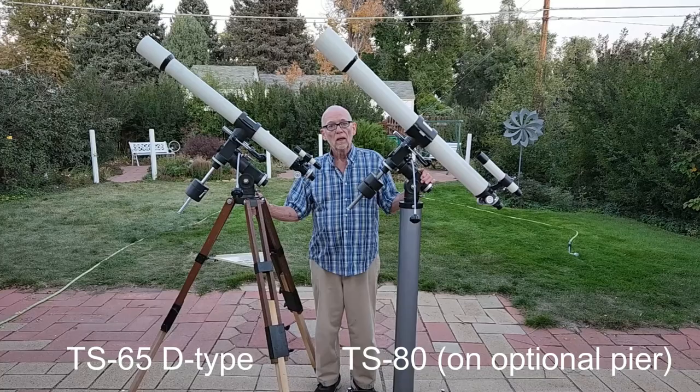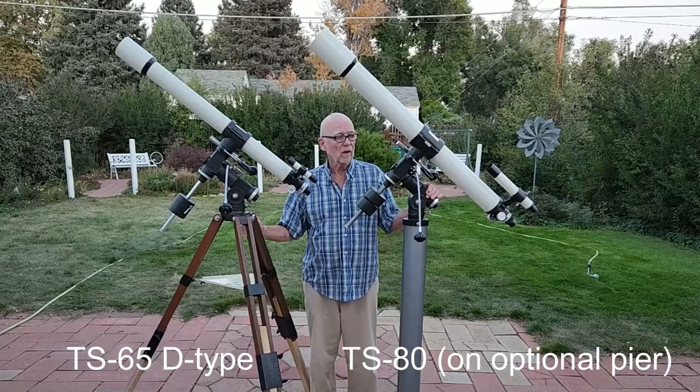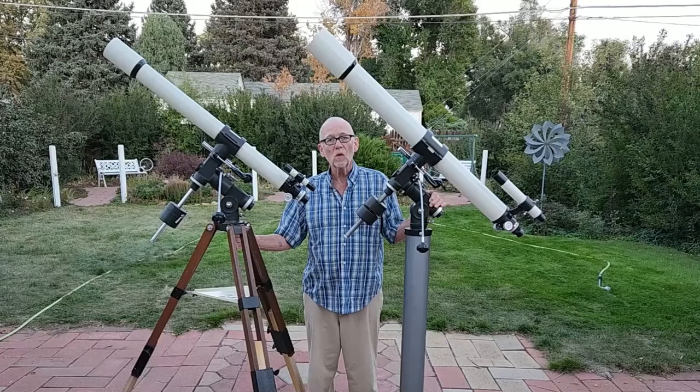Later in the year, they introduced this one. This is the TS-80 triplet semi-apochromat. It came either on a pier or on a tripod. And they were again saying, are you awake yet, Gotoh? Are you awake yet, Nikon?